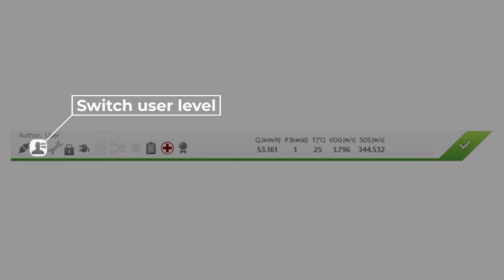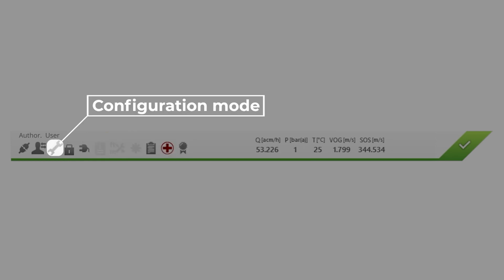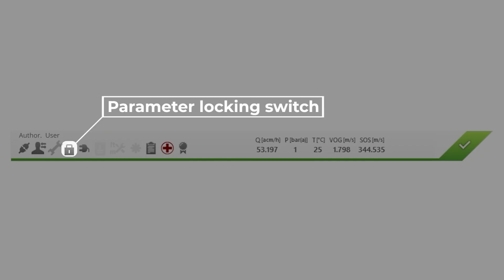To reconnect, click the connection status symbol. By clicking the user icon, you can switch user levels without disconnecting the device. The meter information symbols display important meter information and allow quick access to frequently used functions. The first icon shows whether the device is in configuration mode — when this symbol is active, the configuration mode is active. The parameter locking switch indicates whether the switch is enabled.